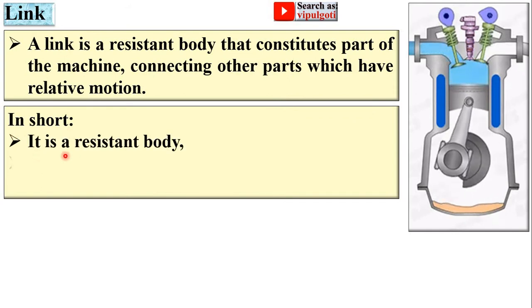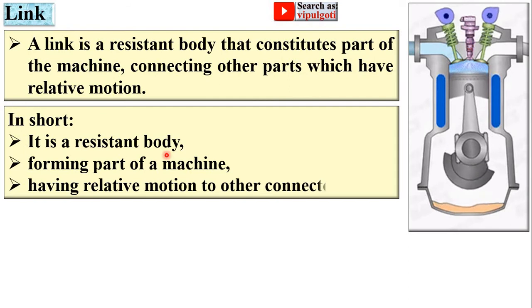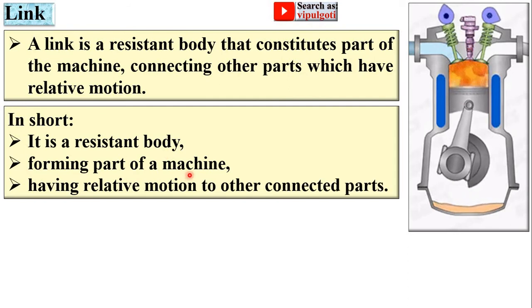In short, a link is a resistant body forming part of a machine. These are the different links forming part of a machine, having relative motion to other connected parts.